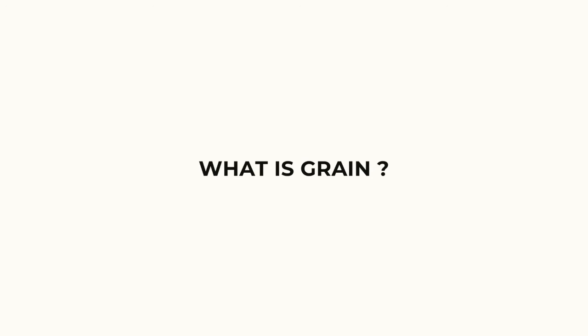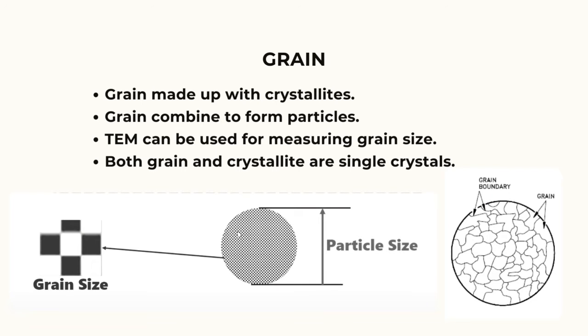What is grain? Grain made up with crystallites. Grain combined to form particles. Both grain and crystallite are single crystals. Transmission electron microscope, TEM, can be used for measuring grain size.